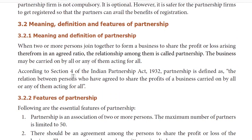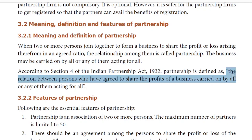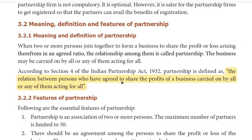Section 4 of the Indian Partnership Act 1932 defines partnership as: the relation between persons who have agreed to share the profit of a business carried on by all or any of them acting for all. Friends, this is the Indian Partnership Act 1932 partnership definition.